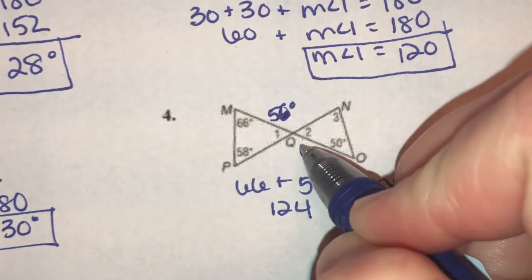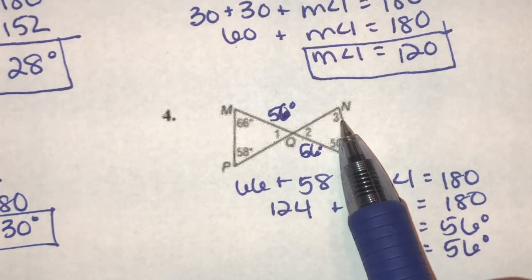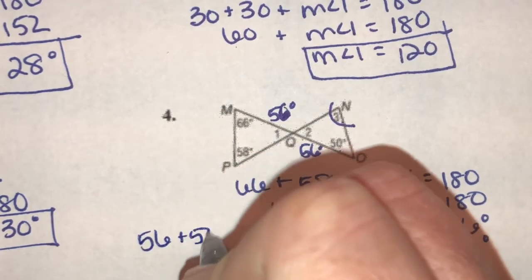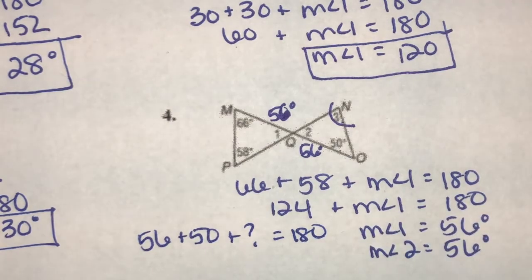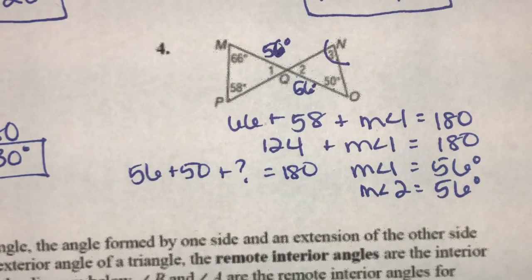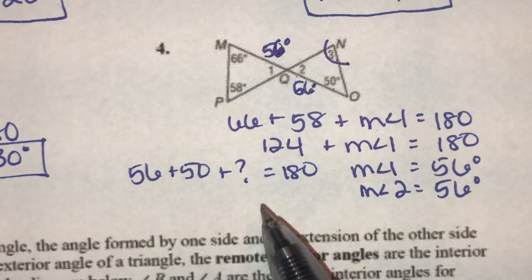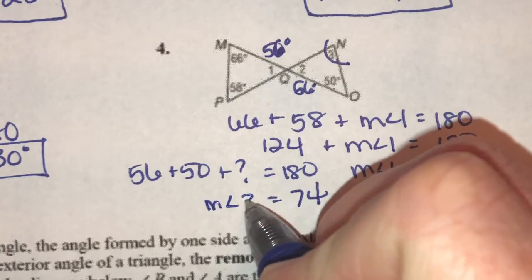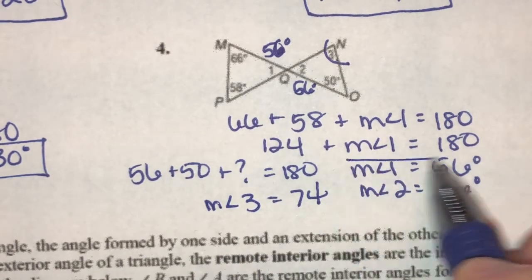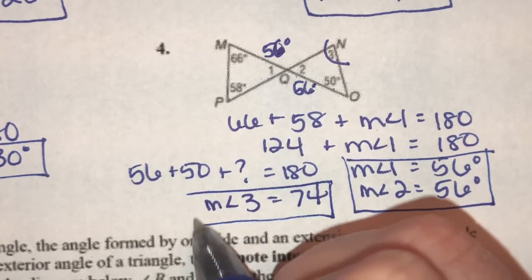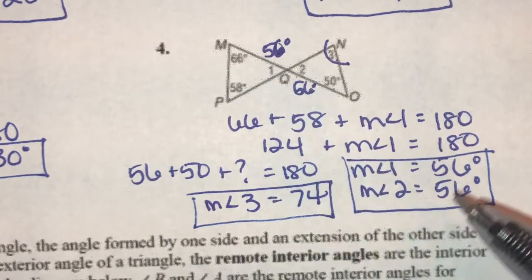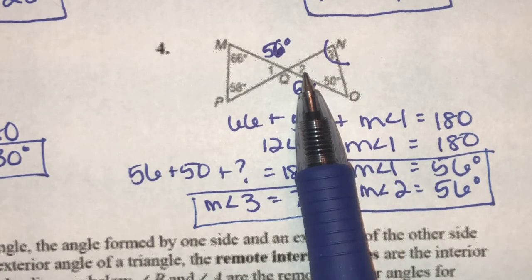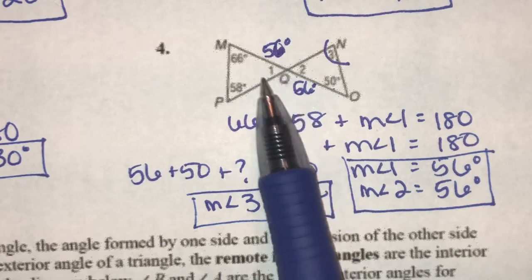Once I know what angle two is, I can find the measure of angle three. 56 plus 50 plus what equals 180? 56 and 50 is 106. Subtract 106 from both sides and I'm left with 74 degrees — that's the measure of angle three. Sometimes it does depend on what order you solve for in your problem. I could not have solved for angle three until I knew what angle two was, and I couldn't solve for angle two until I knew angle one. So I had to start with angle one.